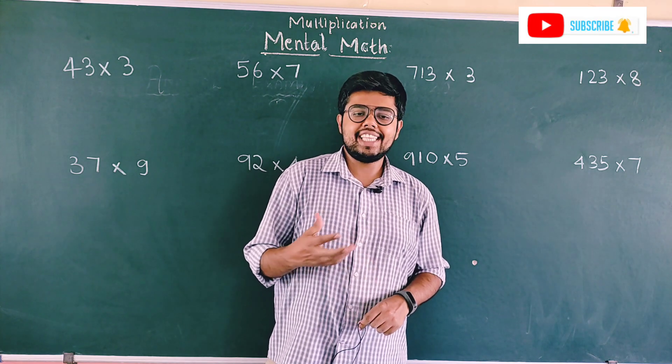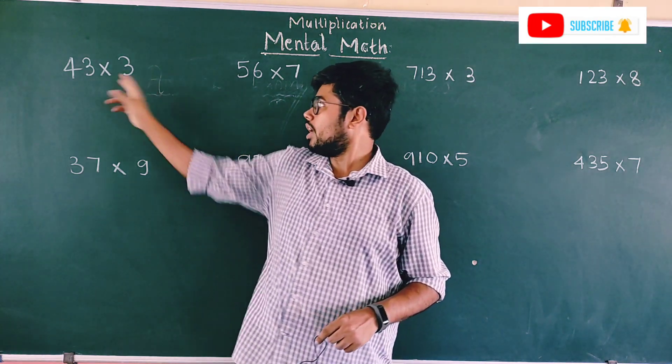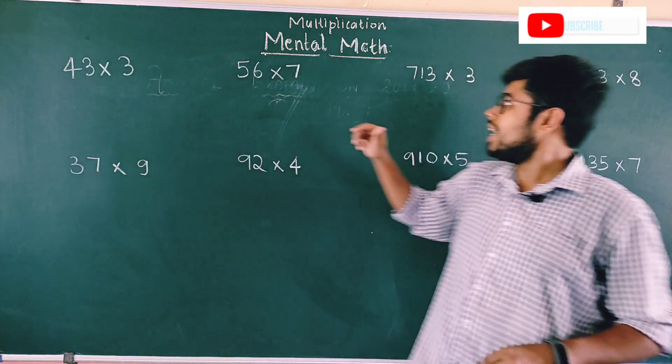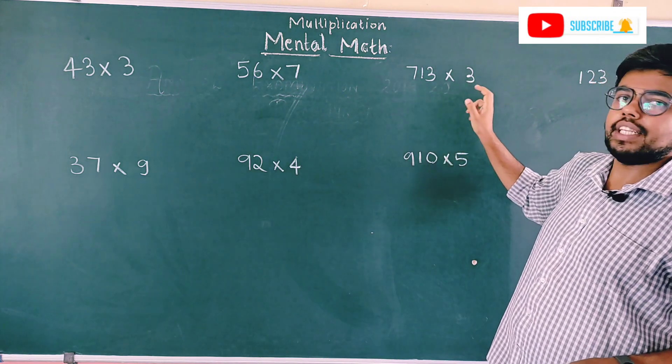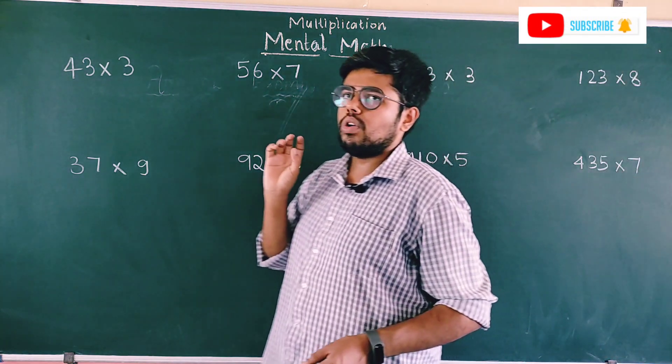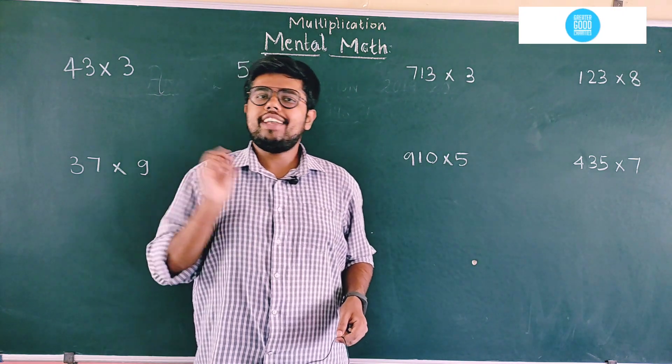Similarly today, let's see the multiplication of numbers with a single digit: double-digit with single-digit and triple-digit with single-digit. These are very easy. To know this, you must know tables.